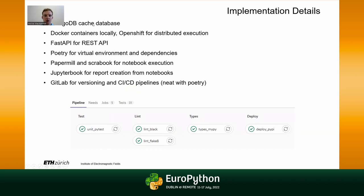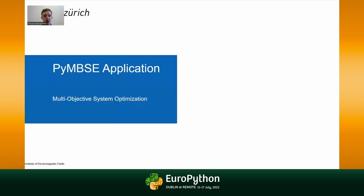Some implementation details: MongoDB for the cache database, Docker with zero-copy locally, OpenShift for distributed execution, FastAPI for service API development, Poetry for virtual environment dependencies, Papermill and Scrapbook for notebook execution, JupyterBook for building reports, and GitLab for versioning and CI/CD pipelines — which is quite neat with Poetry.